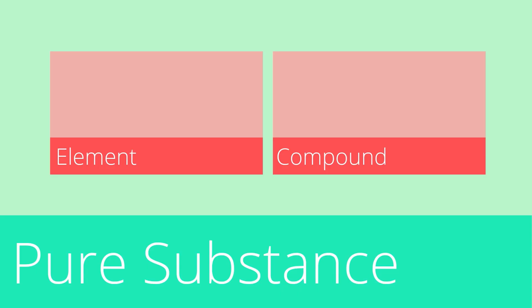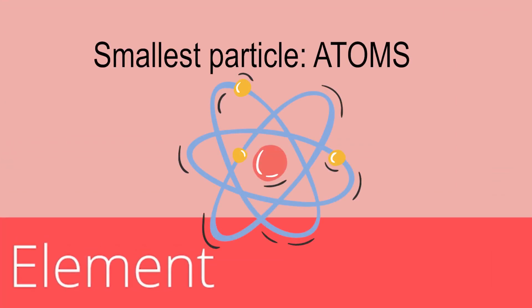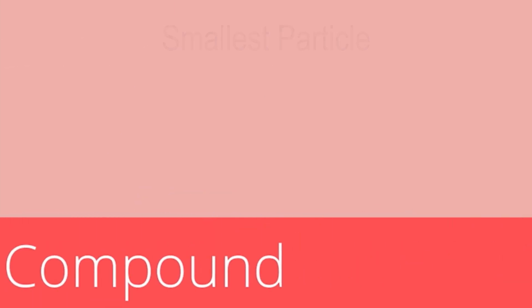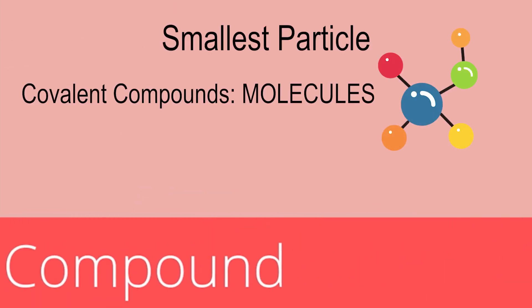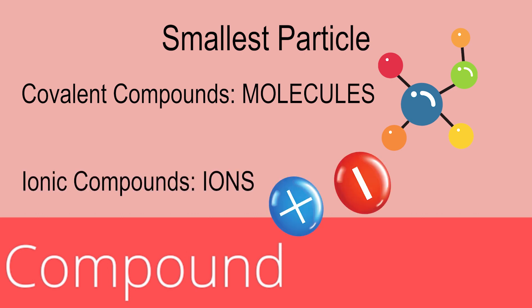As discussed previously, pure substances can be elements or compounds. Elements as small as particles are atoms. Covalent compounds as small as particles are molecules, while those of ionic compounds are ions.